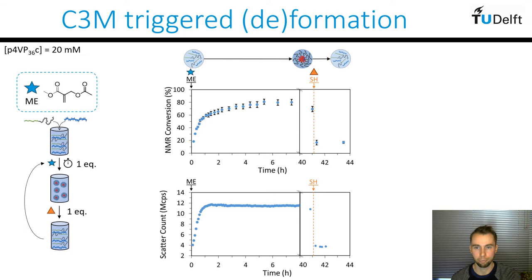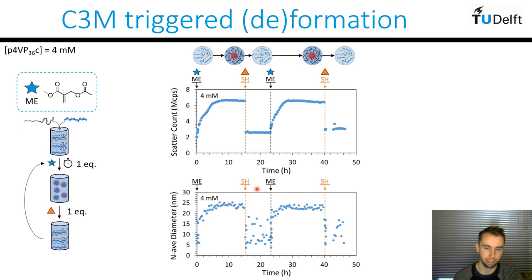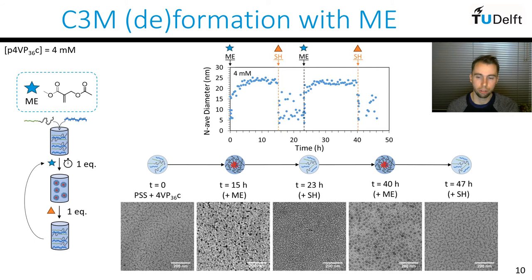We then repeated this experiment running two complete forward-and-back cycles. Presenting both the amount of light scattered and the number-average size determined by DLS, both increase nicely after addition of ME to form micelles, and then rapidly drop away after addition of thiol. In the second cycle you see exactly the same behavior, and the peak values in number average and light scattered are closely correlated between cycles, as are the minimums. We also took TEM samples after each fuel addition, and as you can see from the TEM images, we are convinced that micelles were indeed present. After each thiol addition, TEM confirms those micelles were removed from the system.